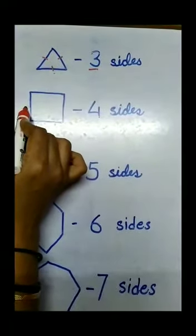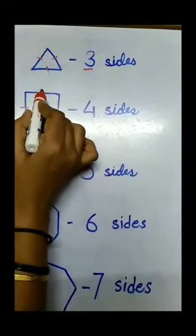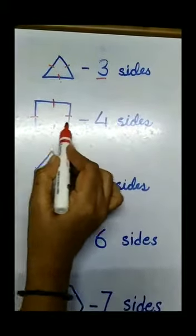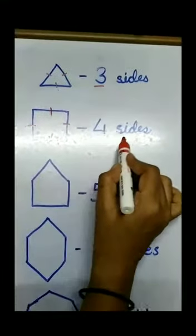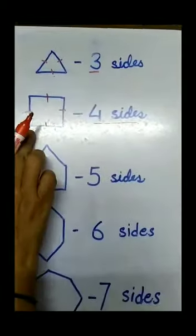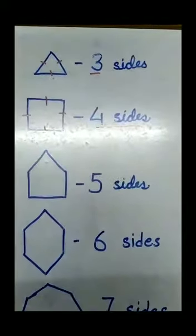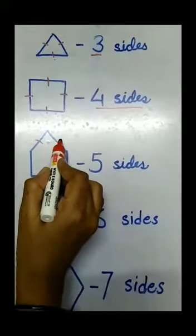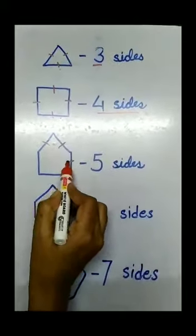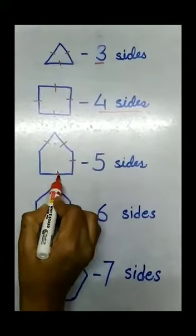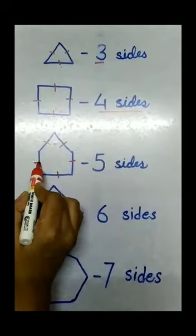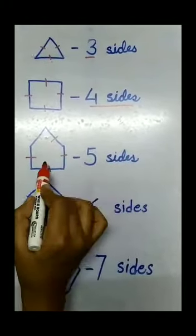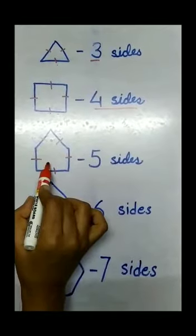Then, 1, 2, 3, 4 — four sides is a square. Then, 1, 2, 3, 4, 5 — five sides, it is called a pentagon.